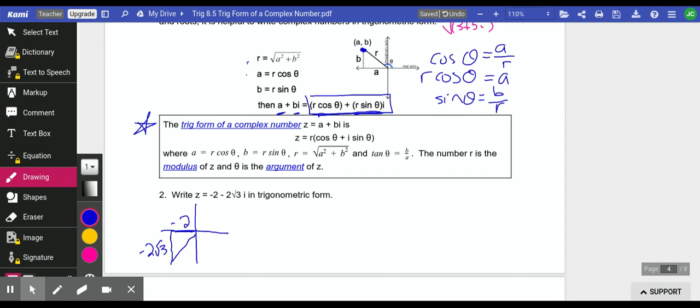What we need to find, remember, trig form is r cosine theta plus i sine theta. We need to find out what this r value is, and we need to find theta. The r value is easy. That's just that Pythagorean theorem, distance formula. We're going to do negative 2 squared